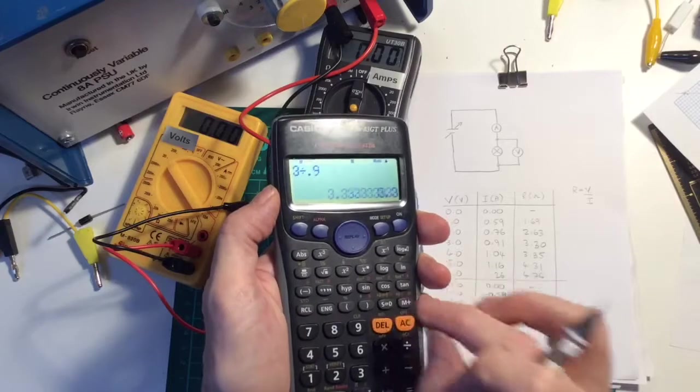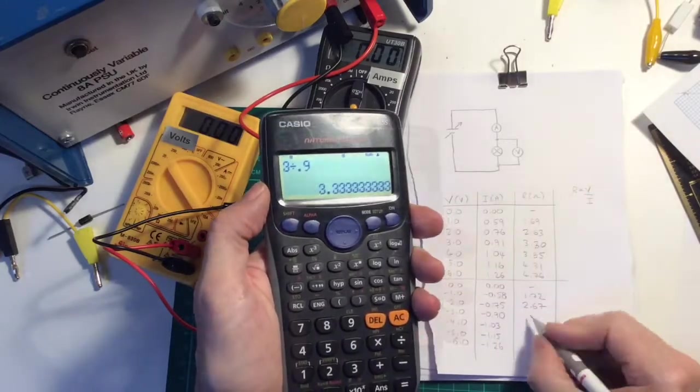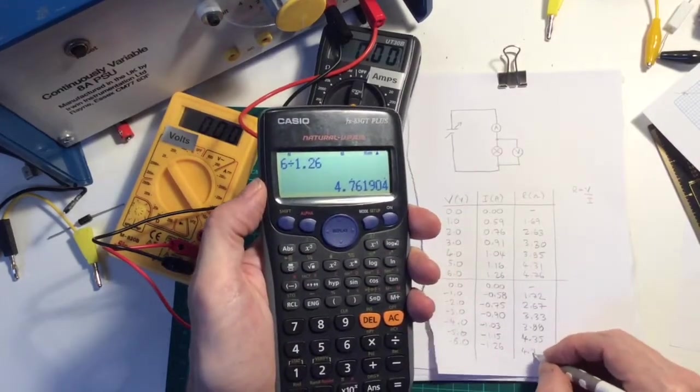Again, this is another recurring decimal, 3.33, 3.88, 4.76.